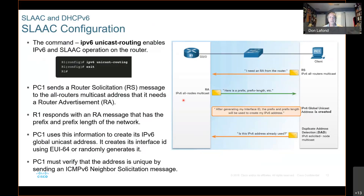The last step is PC1 must verify that the address it created is unique. It does this by sending an ICMPv6 neighbor solicitation message. This is called DAD — Duplicate Address Detection. It sends a multicast address to all nodes saying, this is my address — am I out there? If somebody responds, then it creates another address. If nobody responds, then it knows it has a unique address.